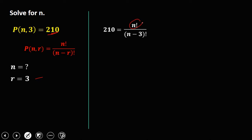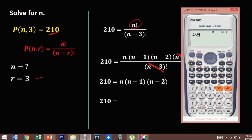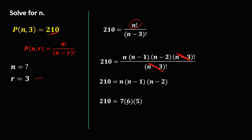We need to rewrite n factorial to eliminate the n minus 3 factorial. That's n times n minus 1 times n minus 2 times n minus 3 factorial. Eliminating the n minus 3 factorial, we get 210 equals n times n minus 1 times n minus 2 — the product of 3 consecutive numbers. Testing: 4 times 5 times 6 is 120, and 5 times 6 times 7 is 210. Writing the highest number first: 210 equals 7 times 6 times 5. Therefore, n is equal to 7.